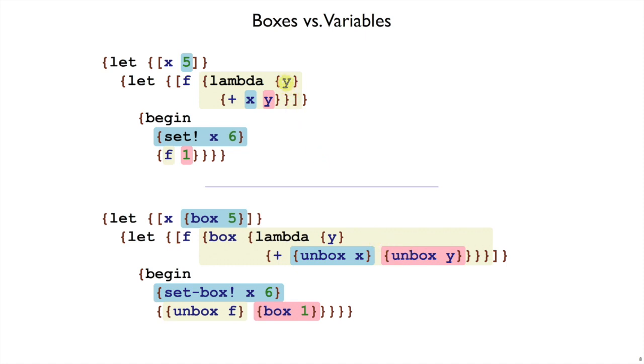We also need to create the box where y gets its value. And the place where y gets its value, since y is an argument to the function, is in the function call. So we have to change all function calls so that they pass the arguments to the function in a box, instead of passing the value directly. And that corresponds to the same kind of box that we put here and here for let bindings.